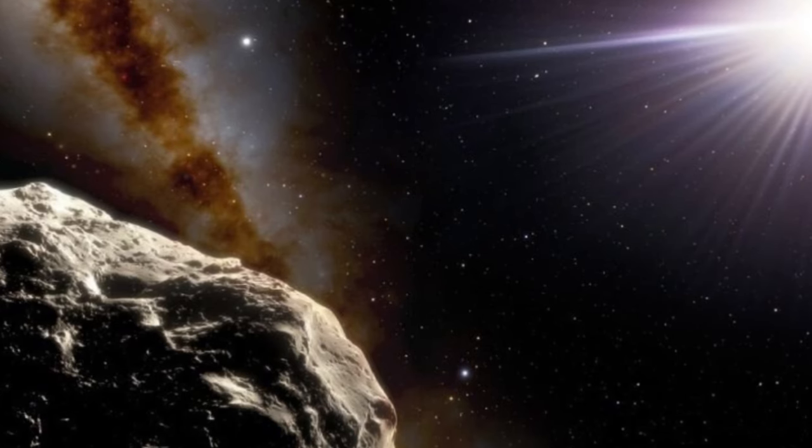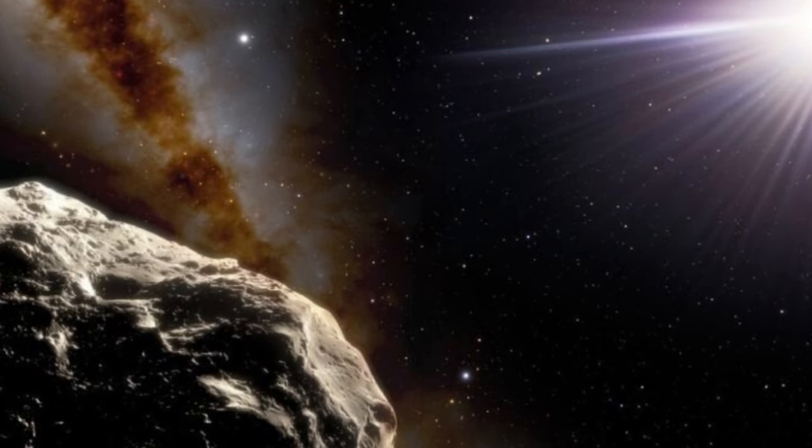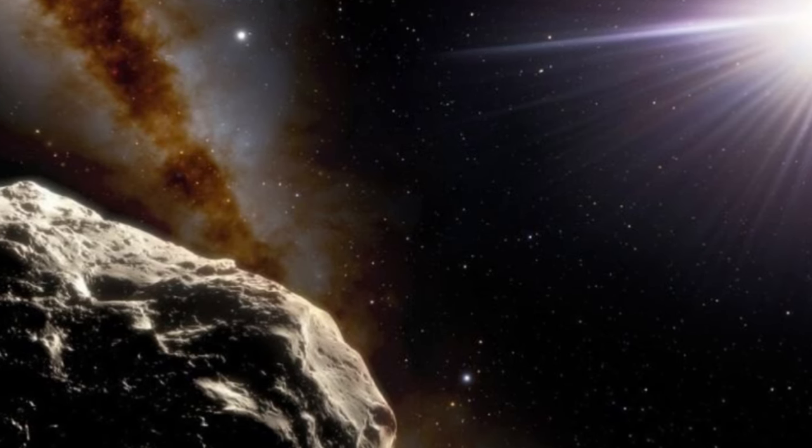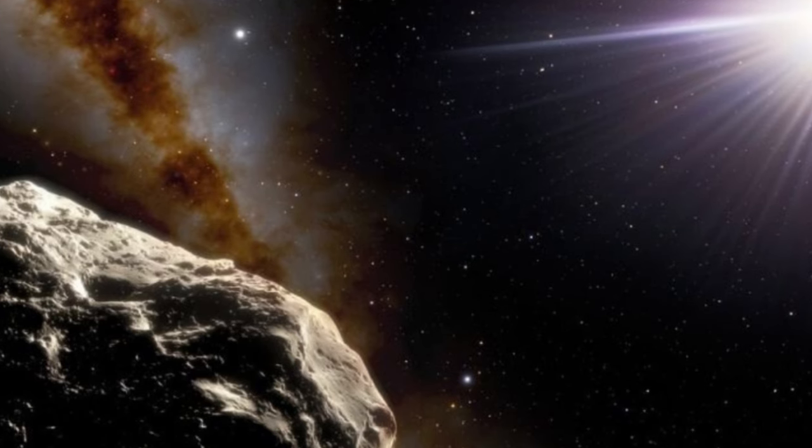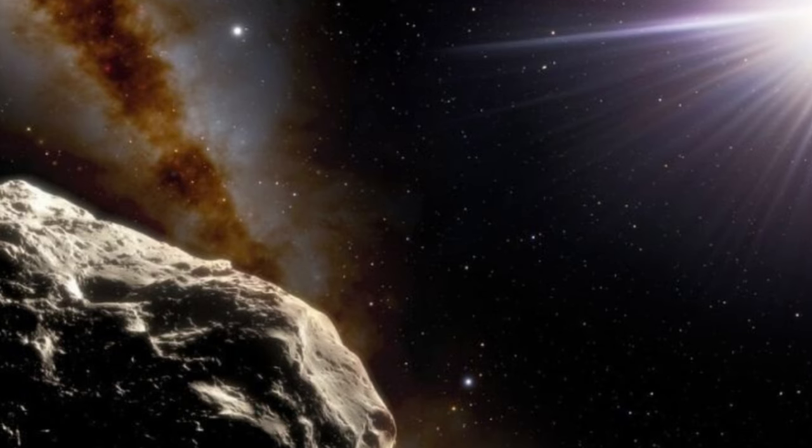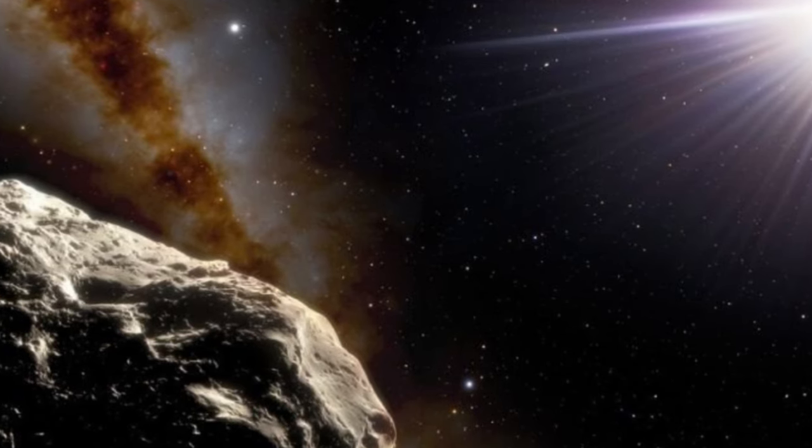Earth has officially been joined in its orbit around the Sun by a new Trojan asteroid. Named 2020 XL5, this chunk of rock is only the second object of its type ever to have been conclusively identified. Its discovery suggests that perhaps Earth Trojans may be more common than we knew, and offers new insights into these mysterious rocks.